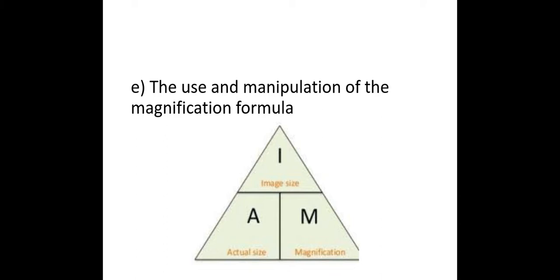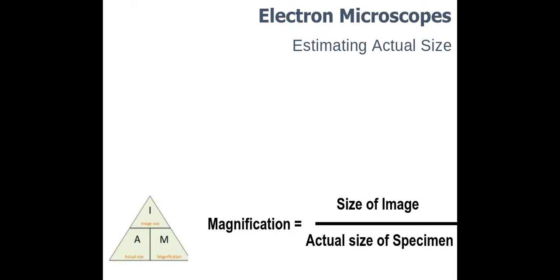Now the reason why we use the formula I AM is because when we produce an image from an electron microscope we cannot put a micrometer on that electron microscope in order to calibrate it to find out what the actual length or width of a cell or part of a cell would be.